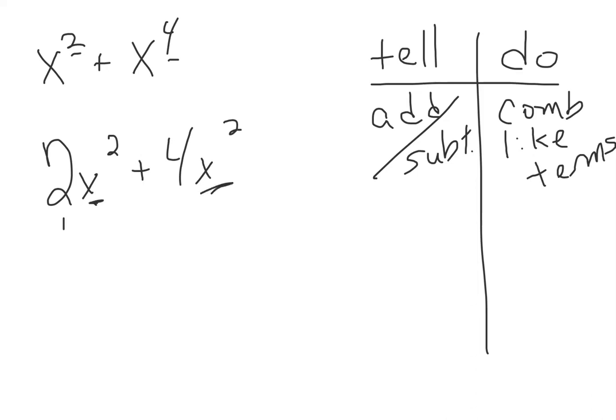These I can combine because exponents are the same. So two plus four, meaning the numbers in front or the coefficients, can do the math. Two plus four is six, and the x squared part just a label. This is what I'm saying by add subtract like terms.